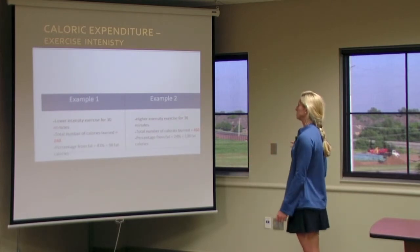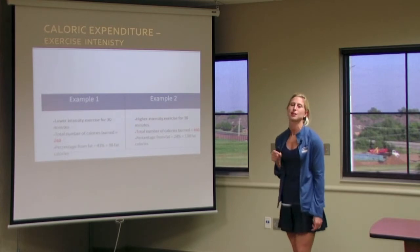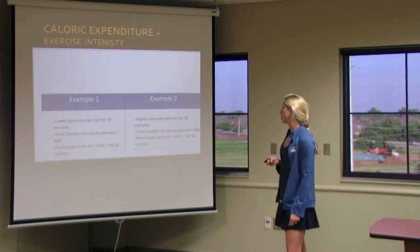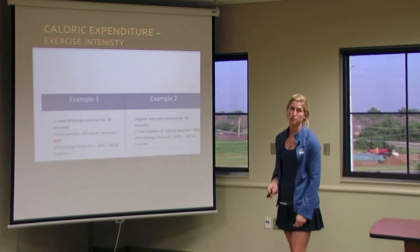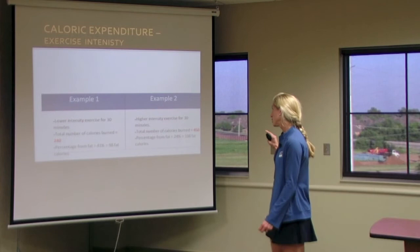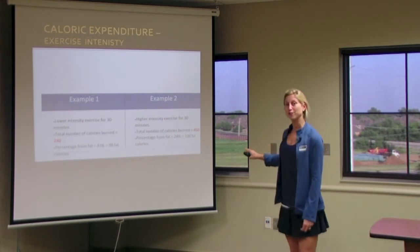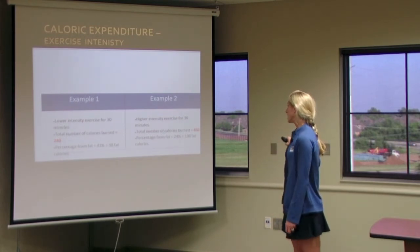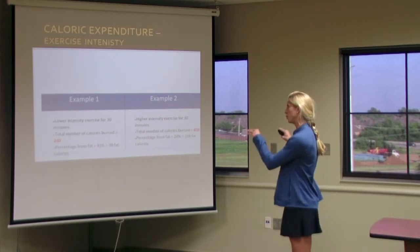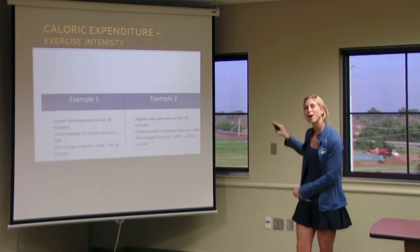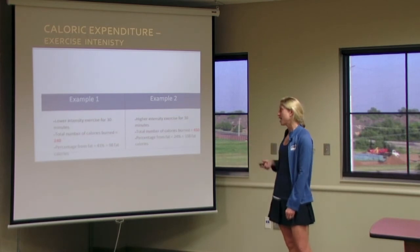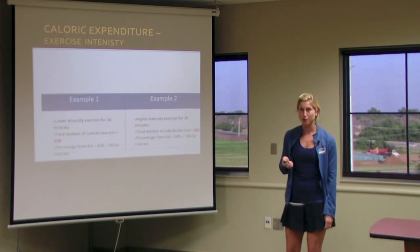In a second example, someone doing 30 minutes of higher-intensity activity burns 450 calories. Their fat percentage is considerably lower at 24%, but 24% of 450 is 108 calories — about 10 more fat calories, just with a little more effort. They also worked their heart and lungs more and helped increase an after-workout burn.